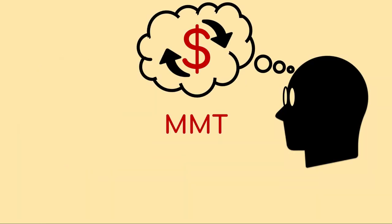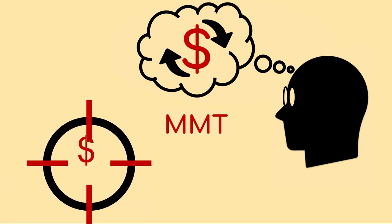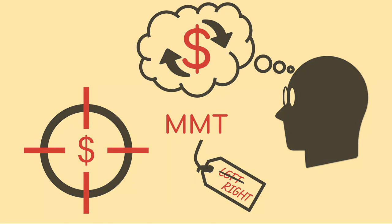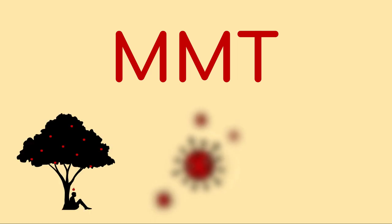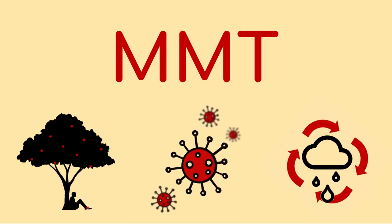MMT is a way of better understanding the economy and making more accurate predictions than mainstream economics. What you choose to do with that information can be left-wing, or right-wing, or conservative, or progressive, or any other label you choose to use. The system works for everybody. MMT doesn't have a time or a side — like gravity, germs, and the water cycle, MMT just is.